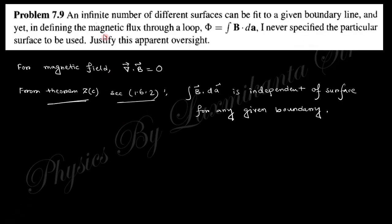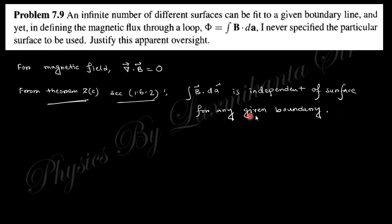Next: an infinite number of different surfaces can be fitted to a given boundary line. If we define magnetic flux Φ = B·dA, we never need to specify the particular surface used. This is because divergence of B equals zero, and from theorem 2c of section 1.6.2, if div·B = 0 then the surface integral is independent of the surface chosen for any given boundary. This is the theoretical theorem.